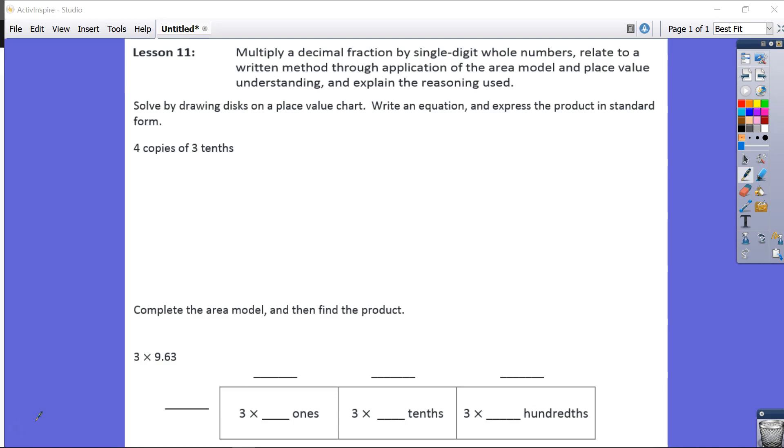Lesson 11. We are multiplying a decimal fraction by a single-digit whole number, relate to a written method through application of the area model and place value understanding, and explain the reasoning used.